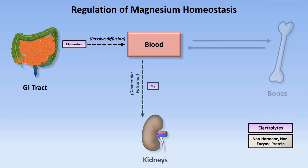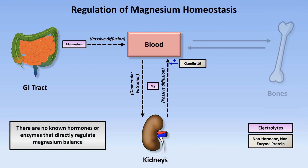Magnesium is freely filtered through the glomeruli of the kidneys, where most is reabsorbed again in the thick ascending limb of the loop of Henle. As with the gut, most magnesium transport in the kidneys is due to passive diffusion between cells down an electrochemical gradient, which itself is partly generated by reabsorption of sodium and chloride here. It is also dependent upon a paracellular protein called Claudin-16, which is a constituent of the tight junction between epithelial cells. Overall, there are no known hormones or enzymes that directly regulate magnesium balance.